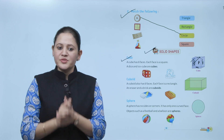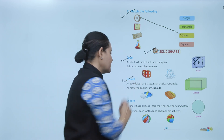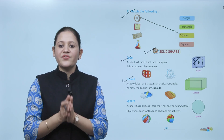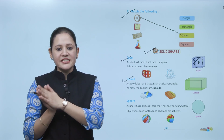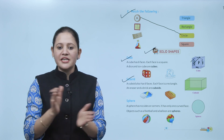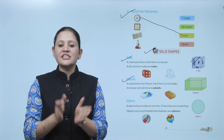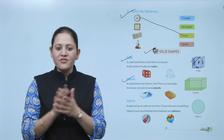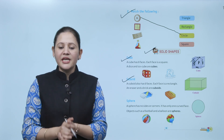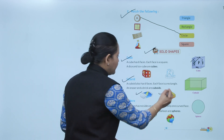Next is cuboid. A cuboid also has six faces but each face is a rectangle. In a cube all faces are identical squares, but in a cuboid the faces are rectangles. An eraser and a brick are cuboids — their shape is cuboid.